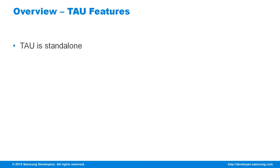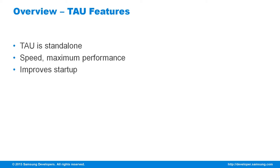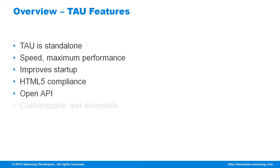TAO is the standard web UI library for the Tizen platform. It aims to simplify coding and to improve speed of creating different applications. TAO brings significant benefits: it is a standalone library providing everything with no added libraries needed, it is tweaked for maximum performance, it improves startup performance, it is HTML5 compliant, it's an open API, it is very customizable and extensible, and it is optimized for creating apps for wearable, mobile, and TV devices.